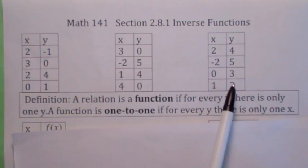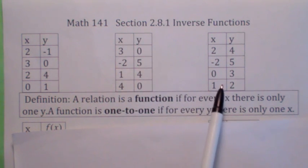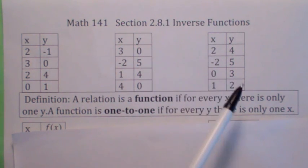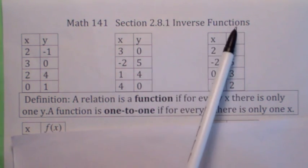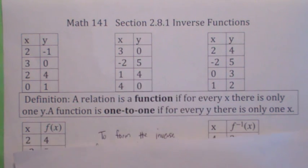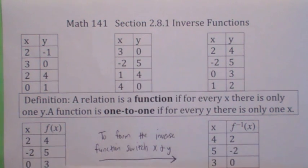This last one though, not only is it a function, but it's a one-to-one function. It's a function because for every x there's one y, and it's a one-to-one function because for every y there's one x. Anyway, let's take that last function.